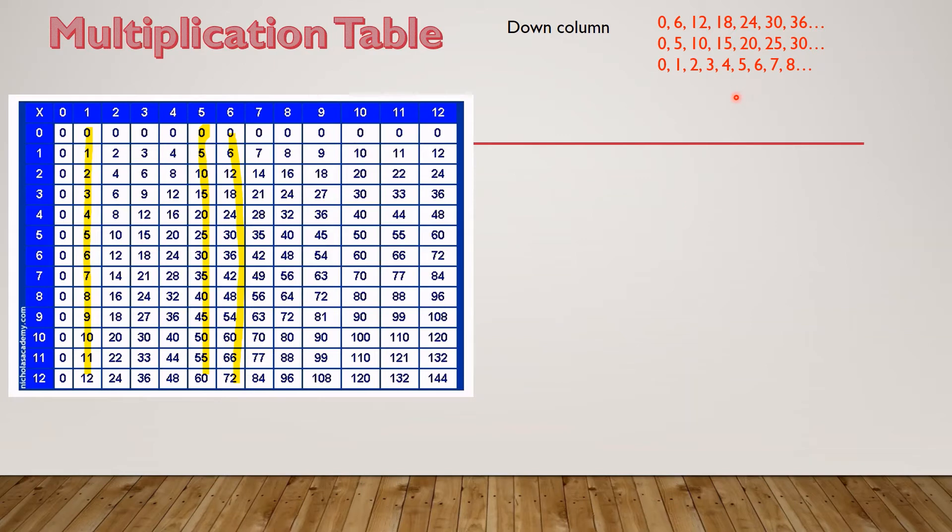Now, I've written these numbers down so we can take a look again. And let's look at this row here. 0, 5, 10, 15, 20, 25, 30, 35, 40, 45. Now, you should recognize that as a count by 5.